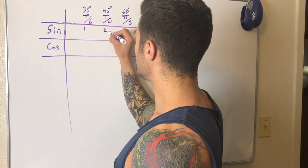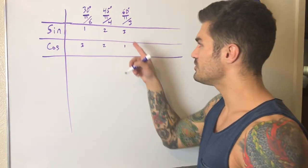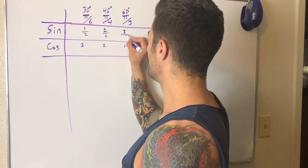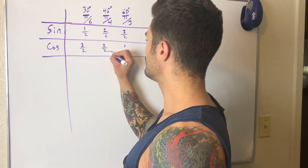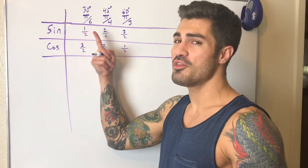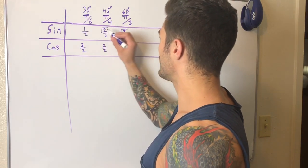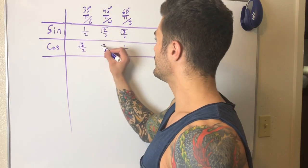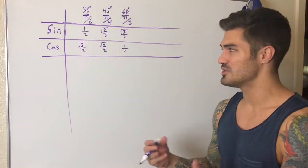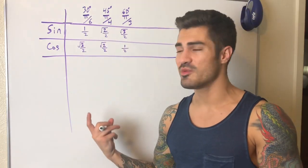The sine and cosine follow a pattern: 1, 2, 3, 3, 2, 1. Everything is over 2 — so 1/2, 2/2, 3/2, then 3/2, 2/2, 1/2 — and everything has a square root in the numerator. Square root of 1 is just 1, so we get √1/2, √2/2, √3/2, and then √3/2, √2/2, √1/2. You can double-check this with your unit circle — these are the values for sine and cosine of 30, 45, and 60 degrees.